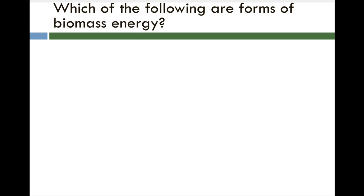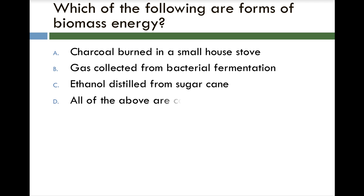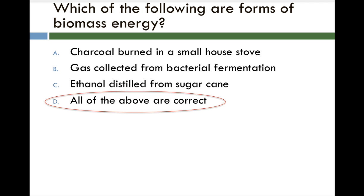Which of the following are forms of biomass energy? A, charcoal burned in a small house stove; B, gas collected from bacterial fermentation; C, ethanol distilled from sugar cane; or D, all of the above. The correct answer is D, all of the above — those are all forms of biomass energy. The key distinction is modern photosynthesis being used for fuel of some sort.